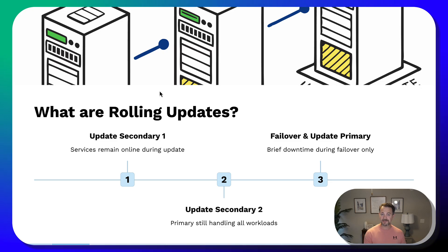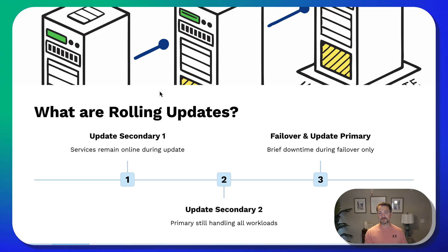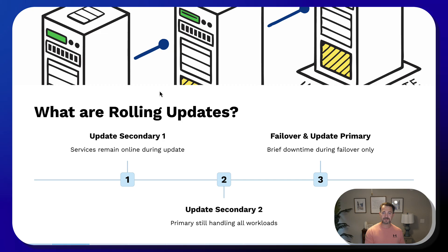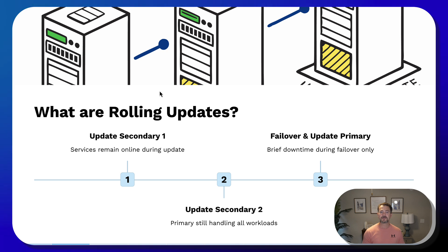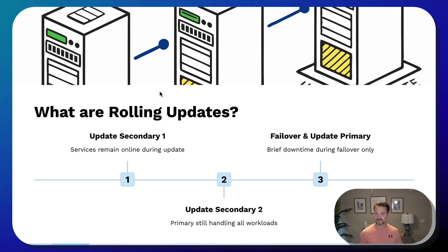Three is to set synchronous secondary replicas to manual failover — this is just to make sure that you're not going to have any failovers until you specify that you need one while installing that patch. Step four is to update secondary replicas first. Any replicas that reside in remote locations or other data centers separate from the primary replica should be updated first. Step five is to set the synchronous secondary replica to automatic failover if it was set to automatic previously. If it was already set to manual, then you don't want to switch that to automatic unless that was your goal.